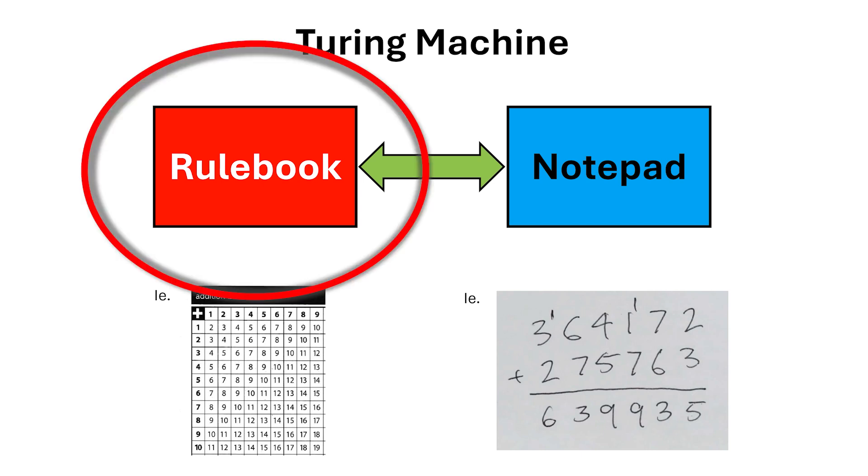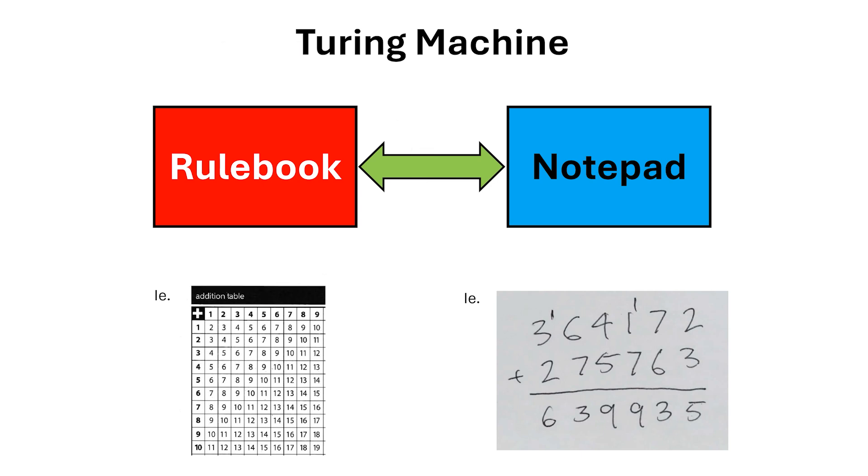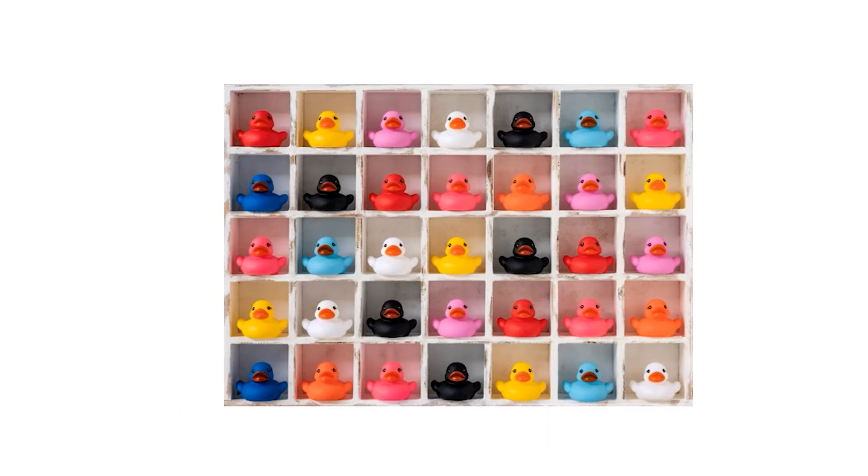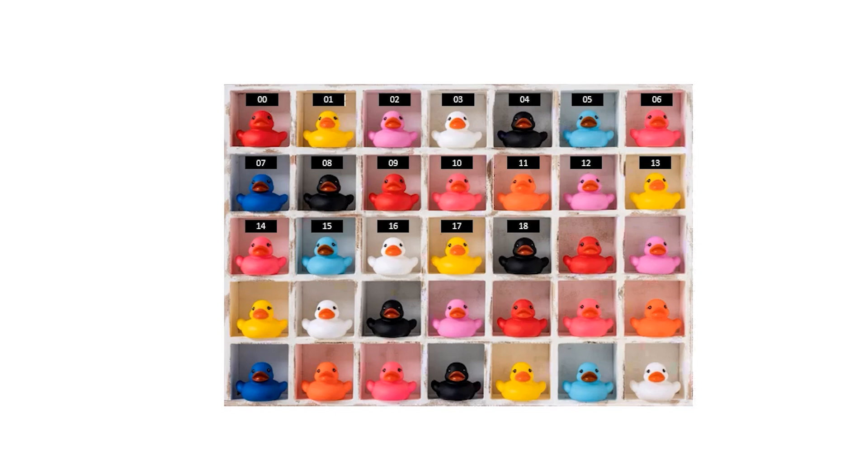So far we've been talking about rulebooks in an abstract way, but what if we want to build one physically? What I'm going to do is store all the rules I want to use in a computer memory. You can think of a computer's memory as a set of pigeonholes, each holding a colored duck. Each pigeonhole has a unique number, and in computer science we usually start counting from zero. The information we store is simply the color of the duck in any given pigeonhole.